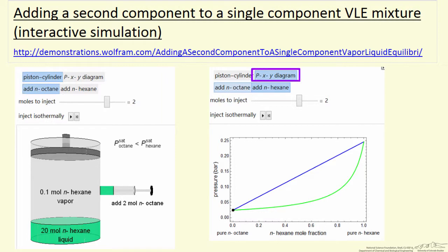If I select the PXY diagram as shown here, this shows the starting condition, which is a vapor-liquid mixture, in this case of pure octane.